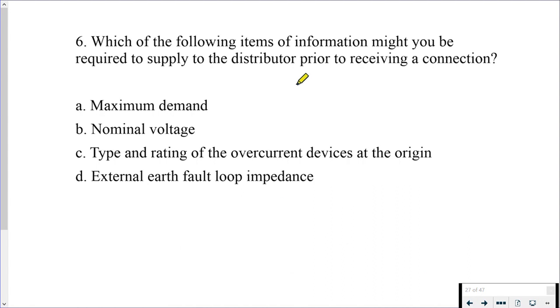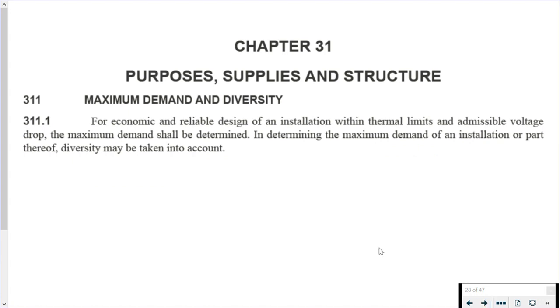Question 6: which of the following items of information might you be required to supply to the distributor prior to receiving a connection? If you have ever had to contact the DNO, the distributor, you know that upon inquiry, Regulation 28, the ESQCR regs, which you can find in Appendix 2 in BS 7671, upon inquiry the DNO, amongst other things, has to give you the nominal voltage, the type and rating of overcurrent protective devices at the origin of the supply, and the external earth fault loop impedance. The one thing that we have to give them is a maximum demand, and the designer carries out that calculation at the outset. So how would you find it? You would be looking for supplies, so purposes, supplies and sources down near the front of the book. And that first sentence there in 311.1 tells you that the maximum demand has to be determined.